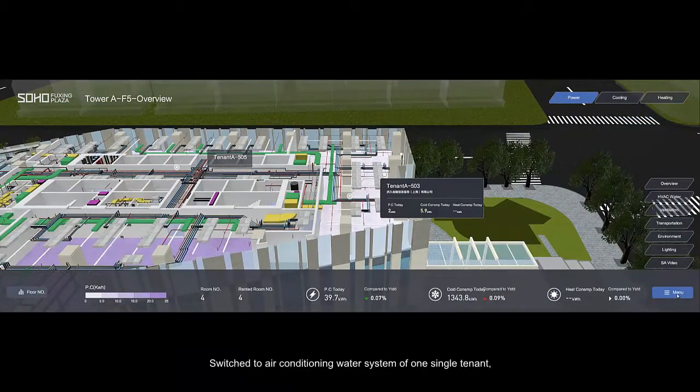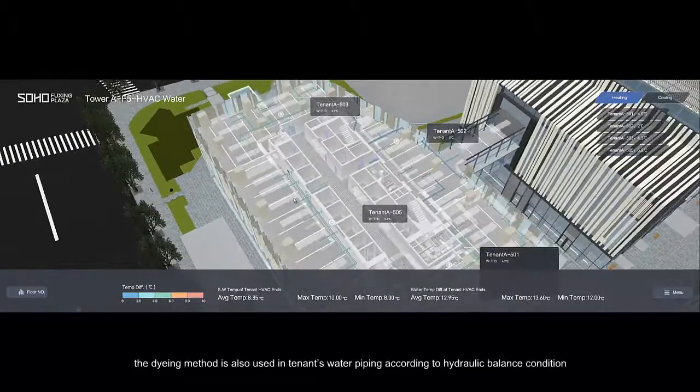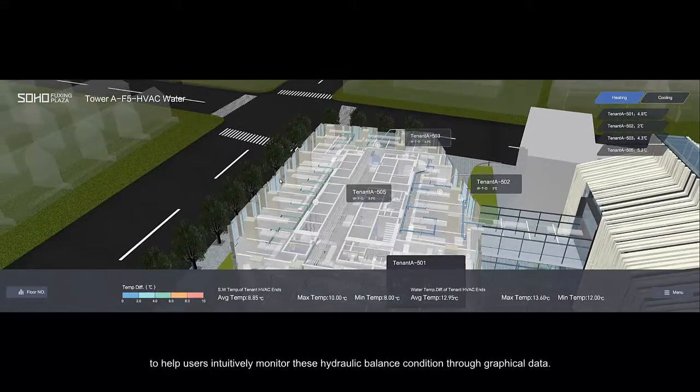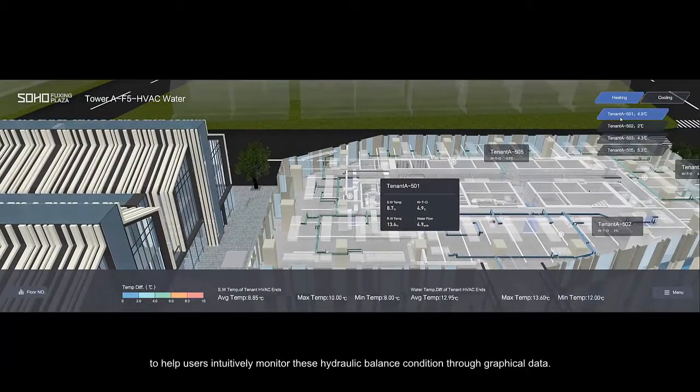Switching to the air-conditioning water system of a single tenant, the dyeing method is used in tenant water piping according to hydraulic balance conditions to help users intuitively monitor this hydraulic balance through graphical data.